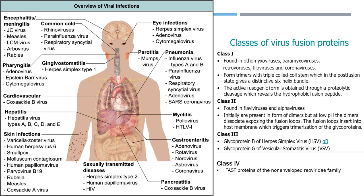Class 4 viral fusion proteins are fusion-associated small transmembrane, or FAST, proteins. They do not form trimers of hairpins or hairpin structures themselves, and they are the smallest known viral fusion proteins. FAST proteins are encoded by members of the non-enveloped Reoviridae family of viruses.